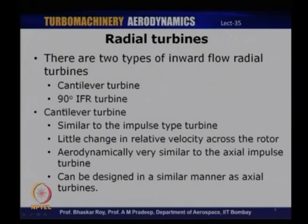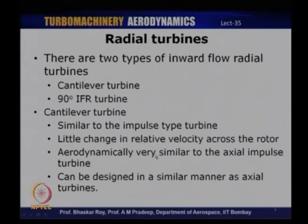We will spend the rest of the lecture discussing primarily the 90-degree inward flow radial turbine. The cantilever turbine is similar to the impulse type turbine: there is hardly any change in relative velocity across the rotor, and it is aerodynamically very similar to the axial impulse turbine. It is called cantilever because the blades are suspended from one end, resembling a cantilever beam — supported only at one end, which is also true for axial turbine blades.